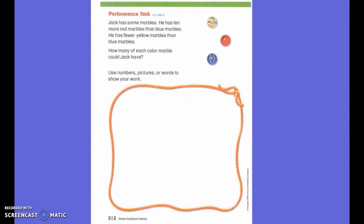I want everyone to get out all of their colorful pages and go to the back. So, we are going to start this one together. Remember, when we do this one on the back, we always have several directions. So, you need to make sure that you are doing all of the directions. It says, Jack has the marbles. He has ten more red marbles than blue marbles. He has fewer yellow marbles than blue marbles. How many of each color marble could Jack have?